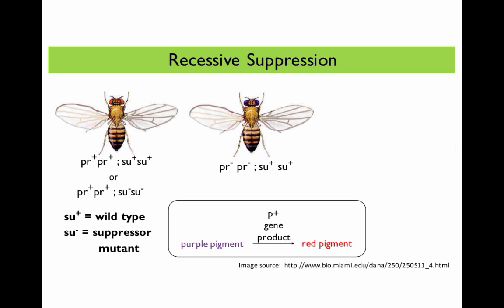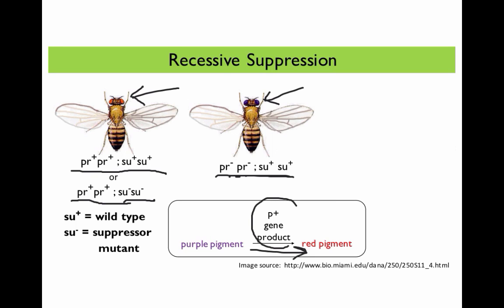An organism that is wild type for both the purple gene and the gene that the suppressor mutant occurs in would have red eyes or the wild type phenotype. Similarly, an organism that is wild type for the purple gene but homozygous recessive for the suppressor mutation would still have wild type eye color, because the suppressor mutation on its own does not elicit a mutant phenotype. Now an organism that is homozygous recessive for a mutation in the purple gene but wild type for the suppressor gene will have purple eyes, because there's no functional product from gene P to convert the purple pigment to red pigment.